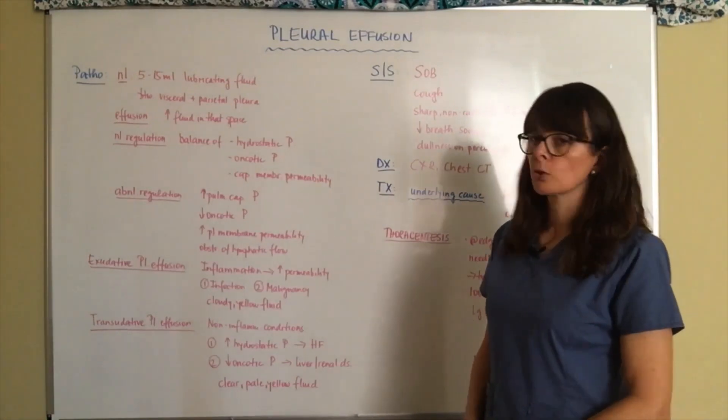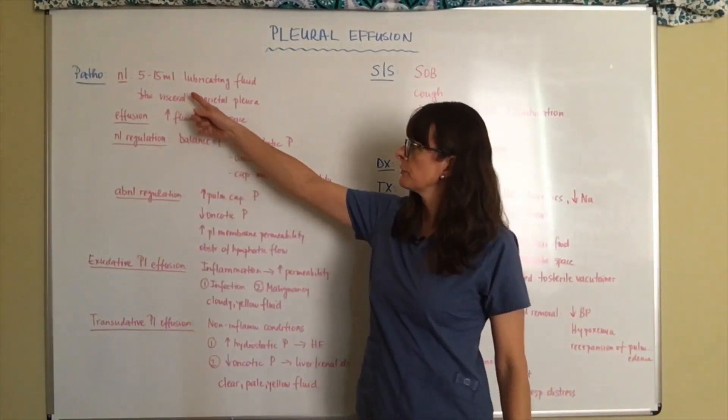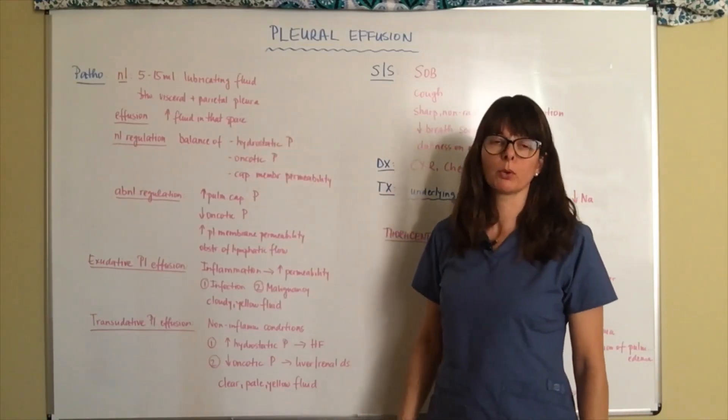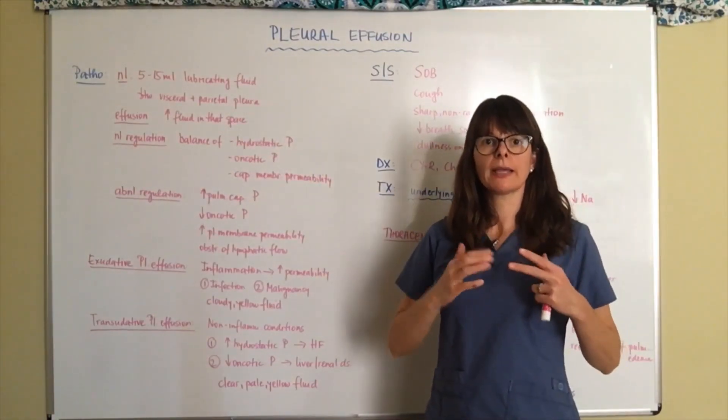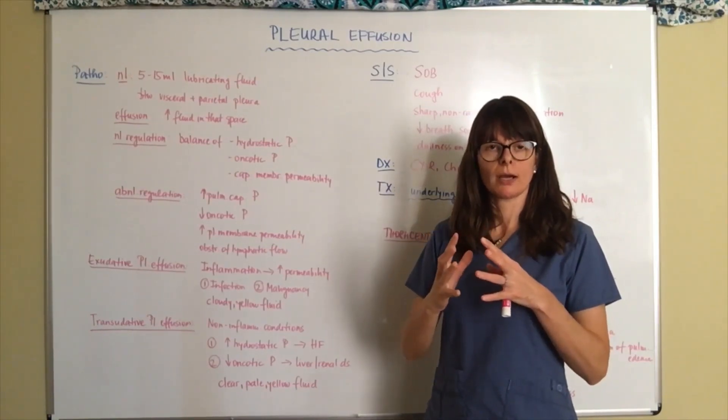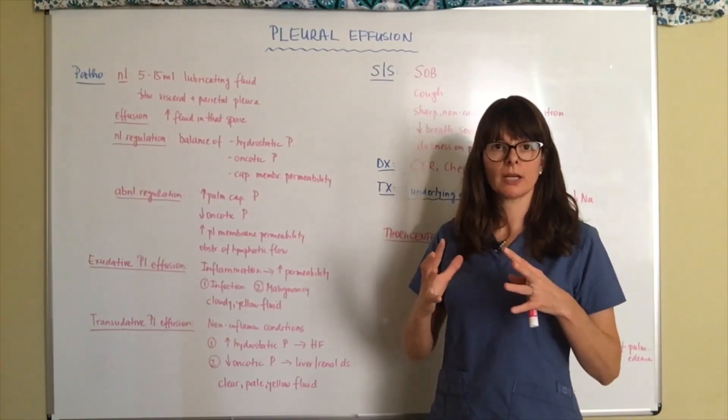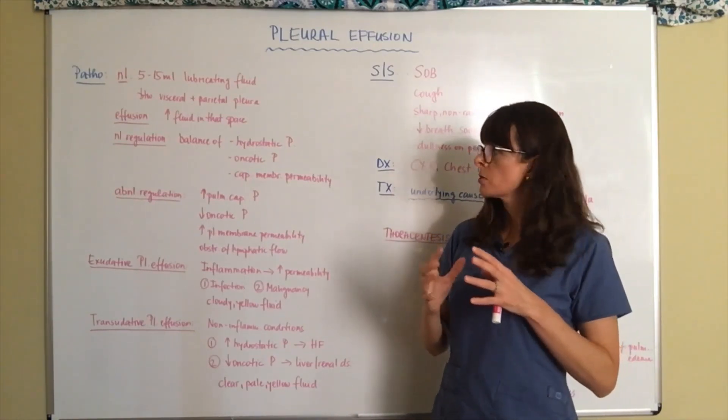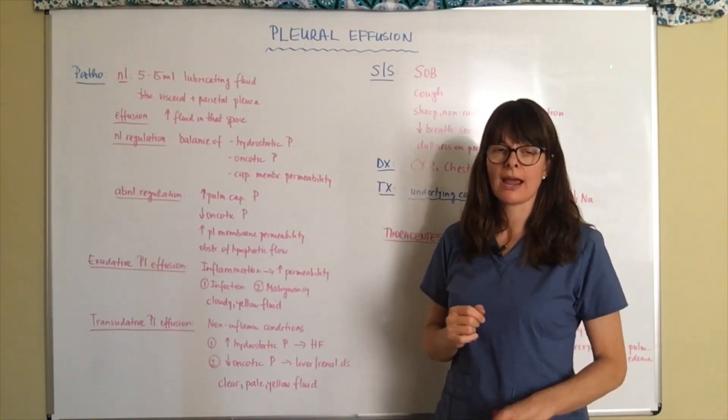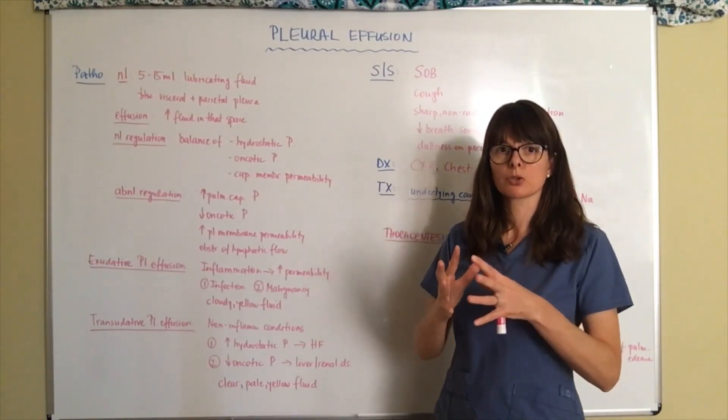Remember that normally we have about 5 to 15 milliliters of lubricating fluid between the visceral and the parietal pleura. These are the different layers that surround the lungs that allow for expansion of the chest and the lungs with inhalation and exhalation so that there is no rubbing against those two cavities and everything happens smoothly.